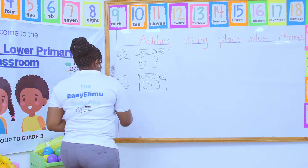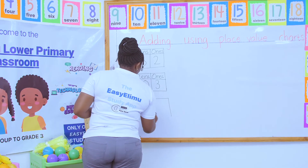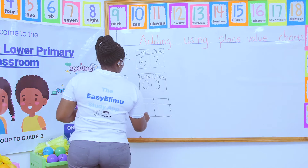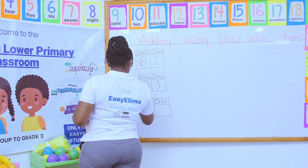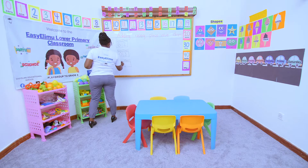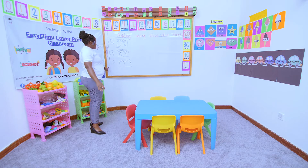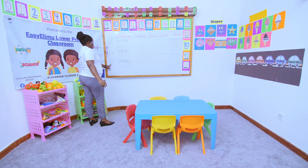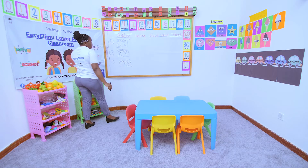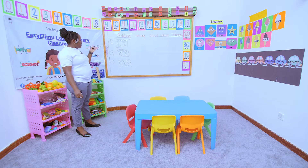What if you've been given a number like 10? Using the place value chart, ones are on which hand — the right hand. So ones, tens: the number on the right hand is zero, and the number on the left hand is one. That is how you represent your numbers on a place value chart.